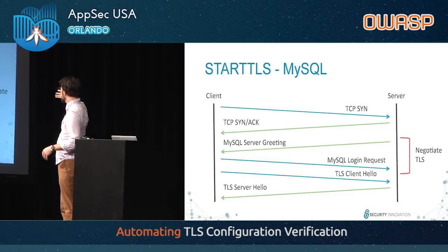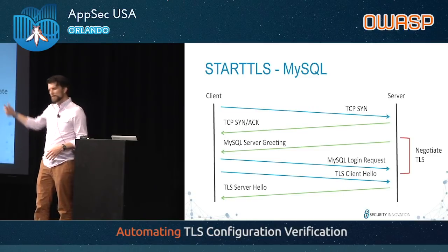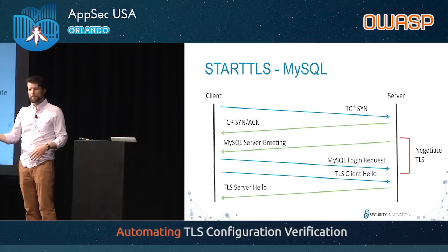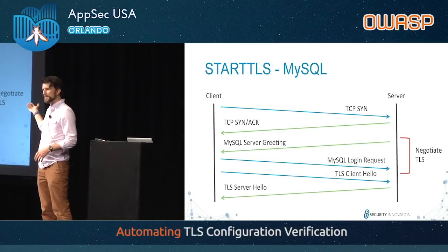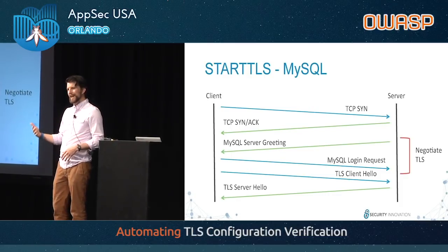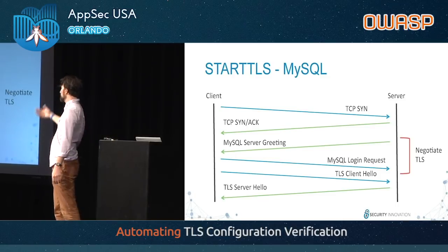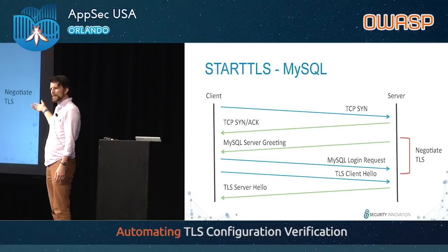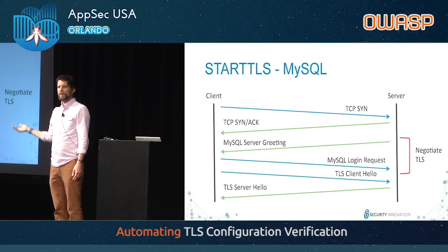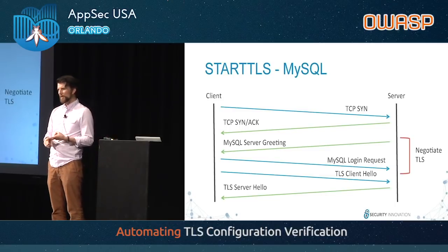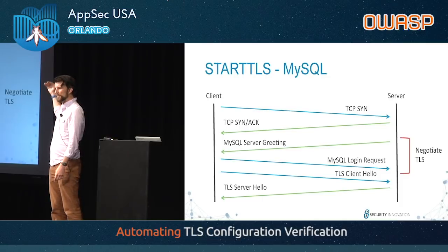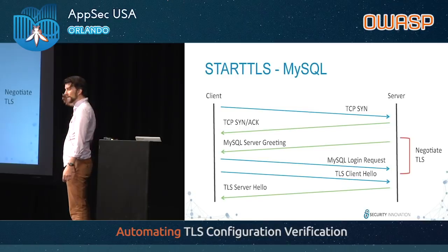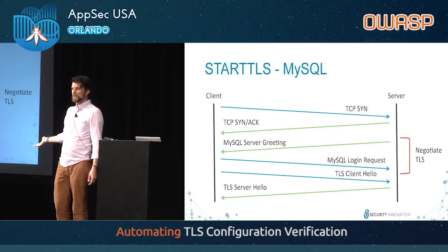The actual MySQL negotiation: TCP SYN, SYNACK, ACK, then the server sends its greeting with a bunch of bits — 'here's the things I support, here's my version number, I support TLS.' The client sends back its request — 'here's what I support, I support TLS' — and then the client immediately starts the standard TLS client hello that you would get over HTTPS. This is the common StartTLS negotiation; it's different for every protocol, but it's always one or two packets negotiated and then a common TLS connection. Adding to the tool wasn't that difficult — I just had to fake being a database server for two packets and then switch to the common TLS routines.